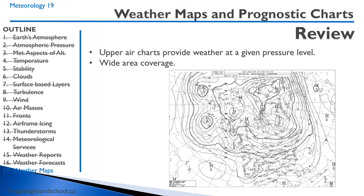Upper air charts provide weather at a given pressure level, such as 850 hectopascals at 5,000 feet or 700 hectopascals at 10,000 feet. They have a wide area of coverage. That concludes the review for meteorology.